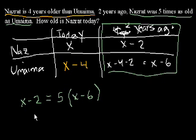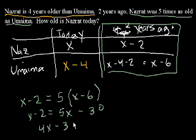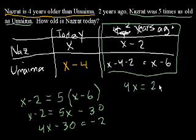Now we just solve for x. x minus two equals 5x minus 30. Subtract x from both sides to get 4x minus 30 equals minus 2, then 4x equals 28, and x equals 7. So we solved the problem.